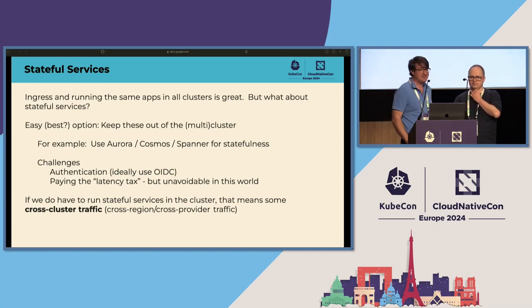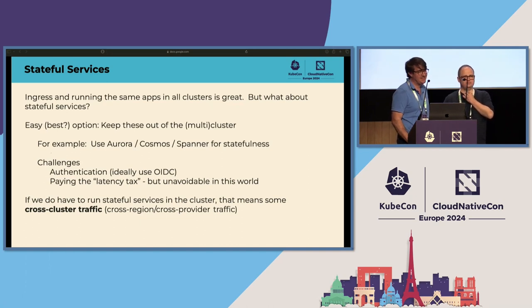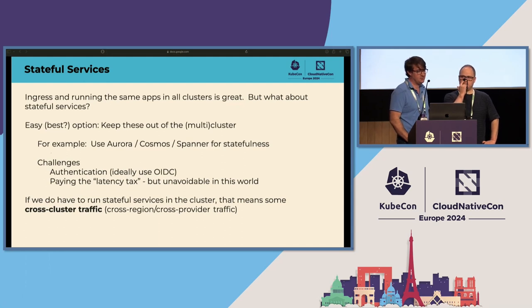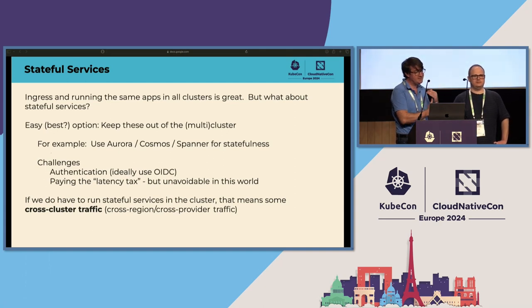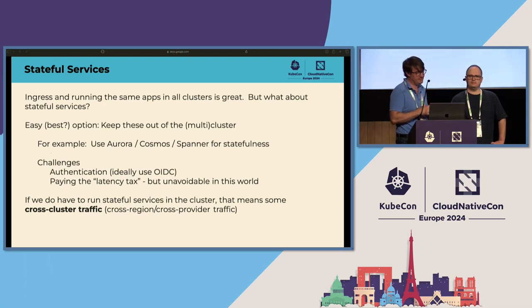I think this is a wonderful sweet spot. Create multiple clusters; every cluster runs all your applications. Use DNS to ingress traffic and spray it across multiple clusters. Use GitOps to do the deployment. Apps only talk to apps within the cluster — no cross-cluster traffic. You avoid a whole bunch of cost, complexity, and problems by doing this. For me, this is a great place to either stop or start, depending on how you want to think about it.